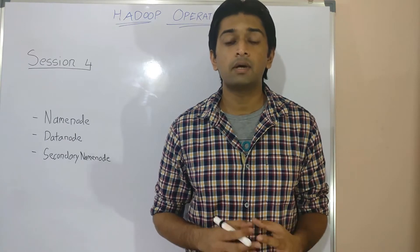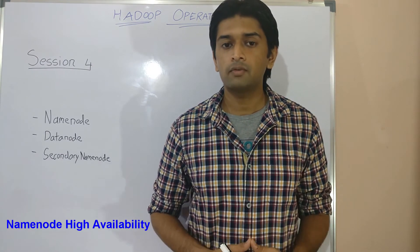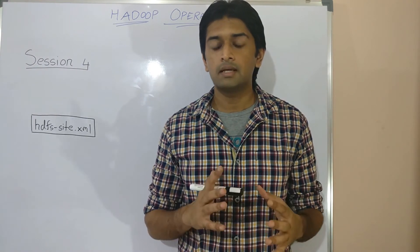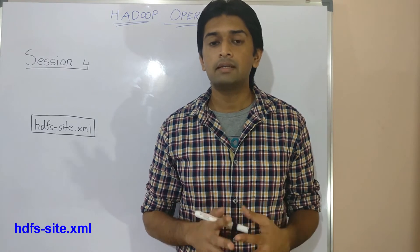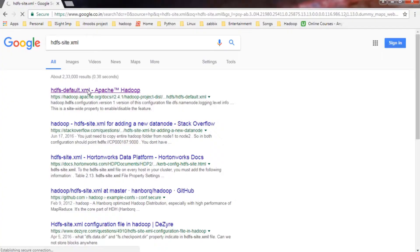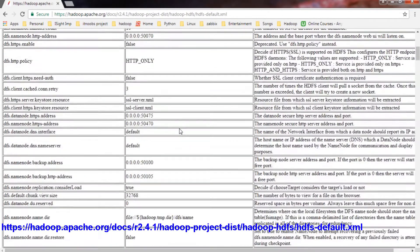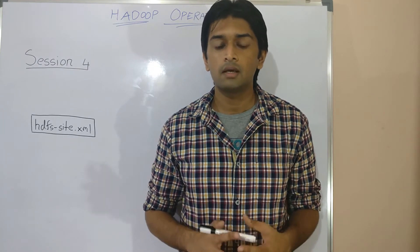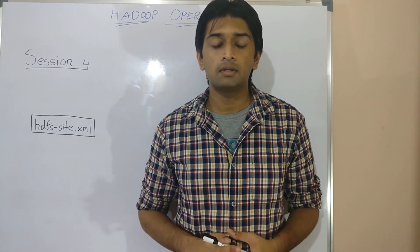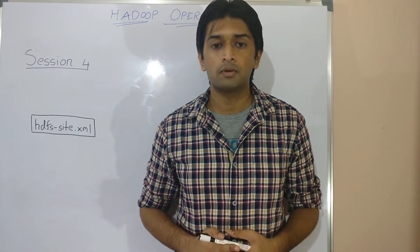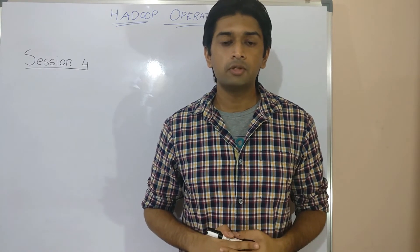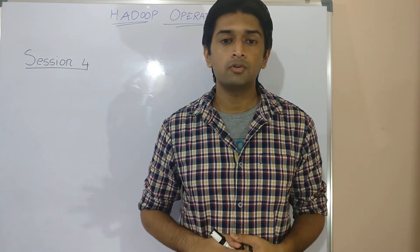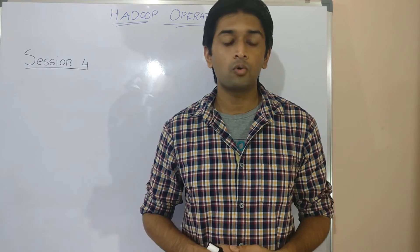In the next session, where I'll be covering NameNode high availability, we will be covering a few more components in addition to these three. The main HDFS configuration file is hdfs-site.xml. You can find details about all the parameters and their default values at hadoop.apache.org — I'd suggest keeping this handy for troubleshooting and tweaking HDFS behavior in a production environment. For the lab demos I'll be using the same Apache Hadoop system from the previous session.